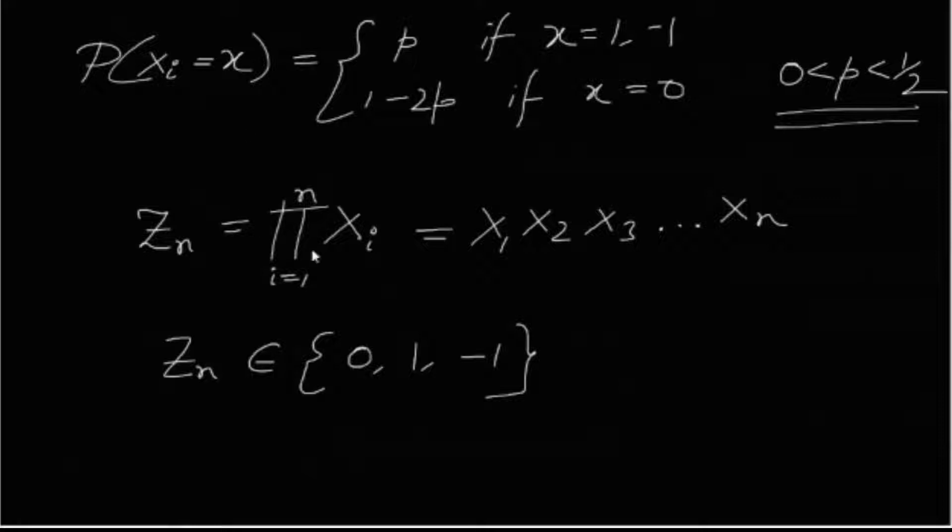Now zn is nothing but the product of the xi's. It's very clear that since zn is the product of the xi's and each of the xi's is either 0, minus 1 or plus 1, therefore the entire value of zn is also 0, 1 or minus 1. It's very easy to understand that it cannot have any other values.